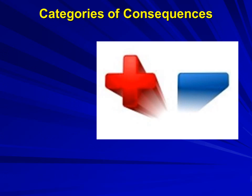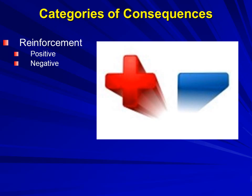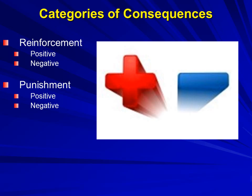Behaviorists use more exacting terminology with very stringent criteria for being included in those liked and disliked consequence categories. Yes, there are so many things that can happen to us once we display an action, but they fall into four groupings by their effect on our behavior. You remember reinforcement and punishment — positive reinforcement and negative reinforcement, punishment of the positive and negative type.